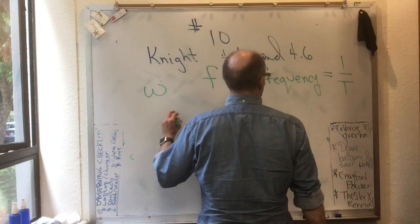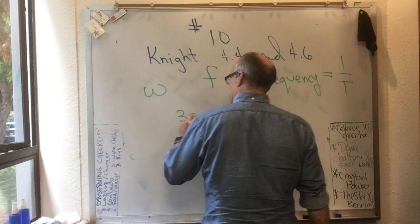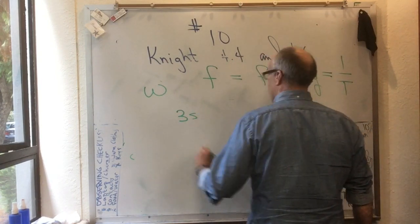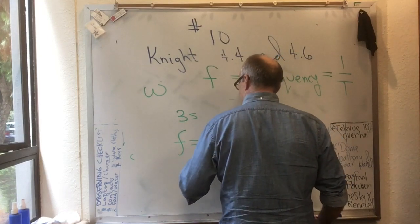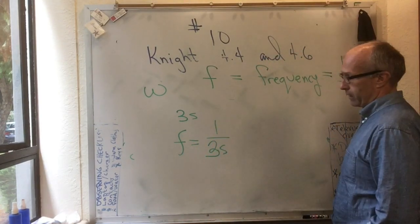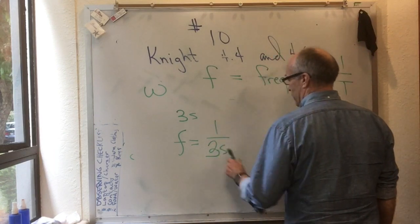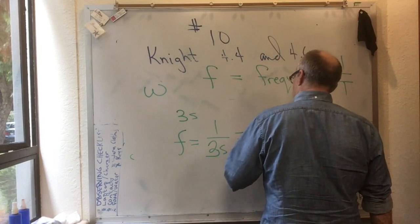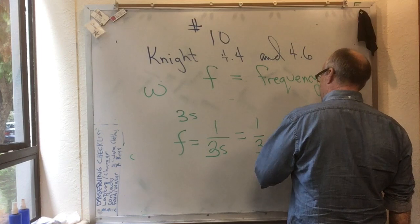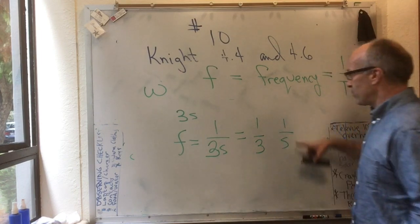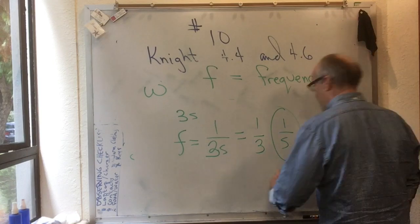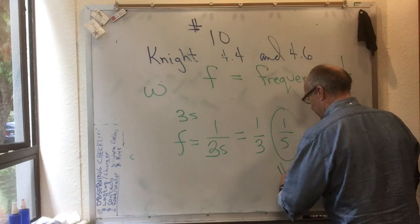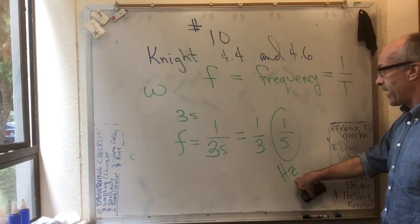If it takes 3 seconds to go around once, then f, the frequency, is once in 3 seconds, 1 over 3 seconds, which is equal to 1/3 of once per second. And the units per second is so common it has a name, and we call it the hertz. And we abbreviate it capital H, little z.